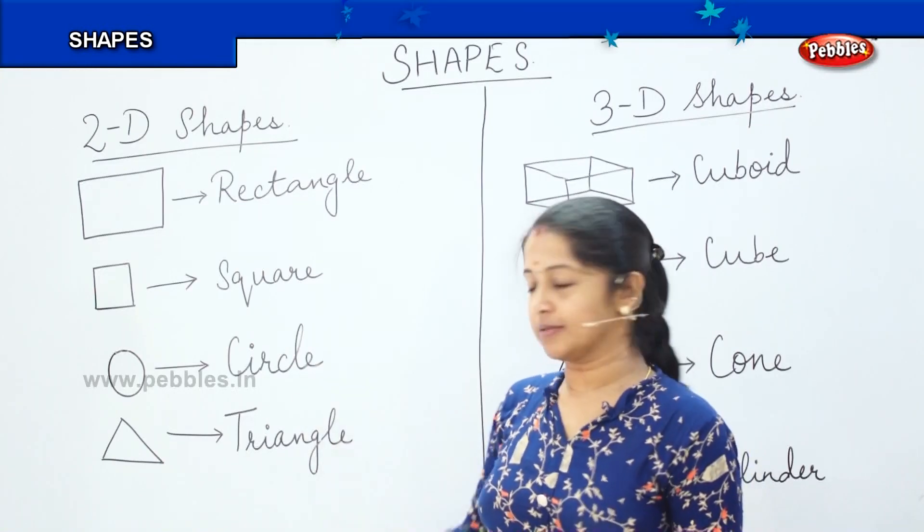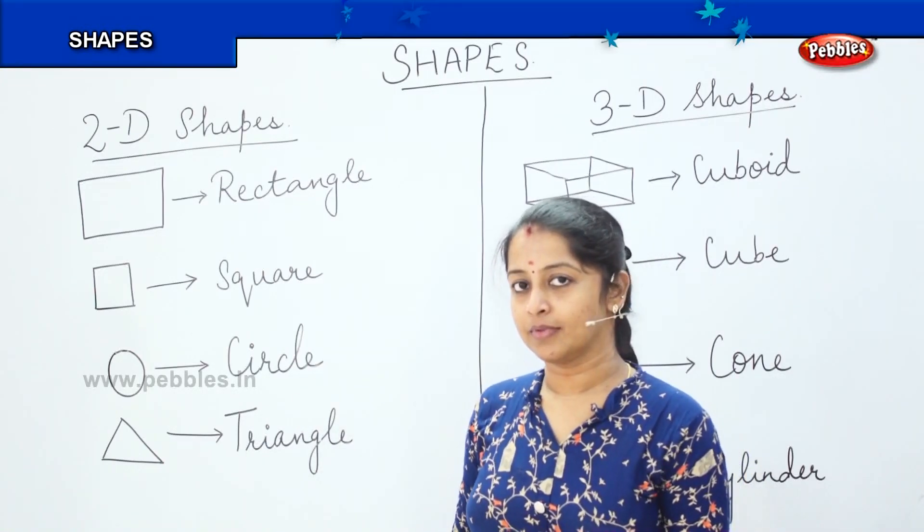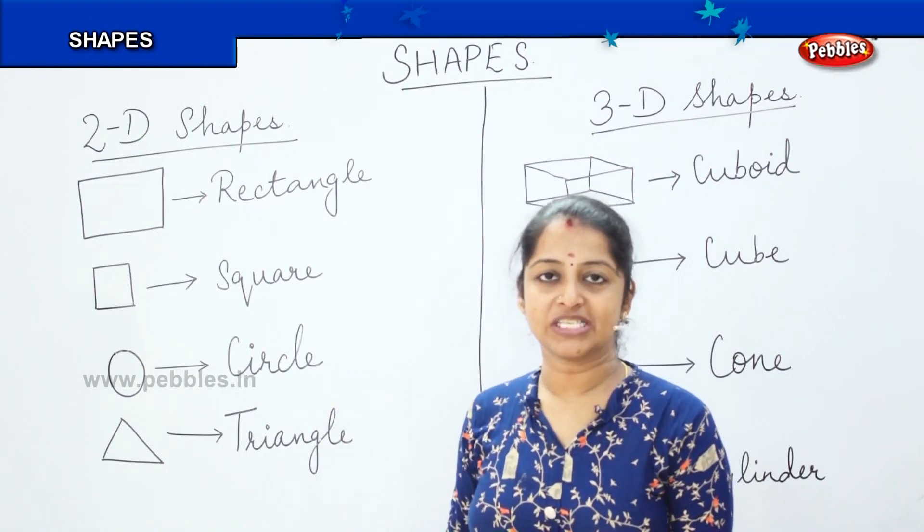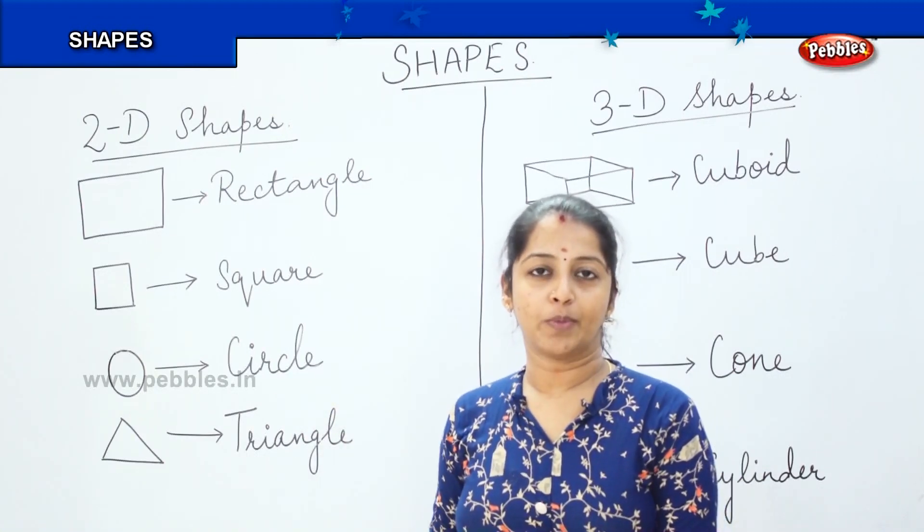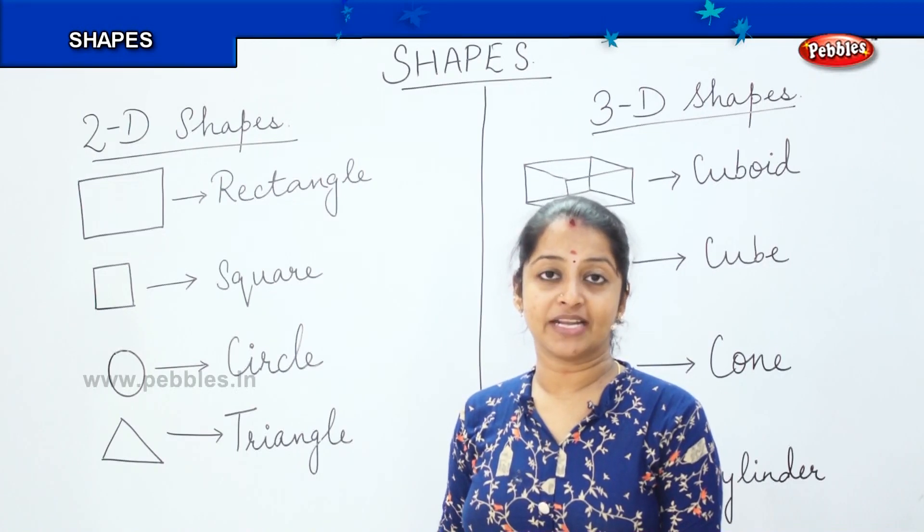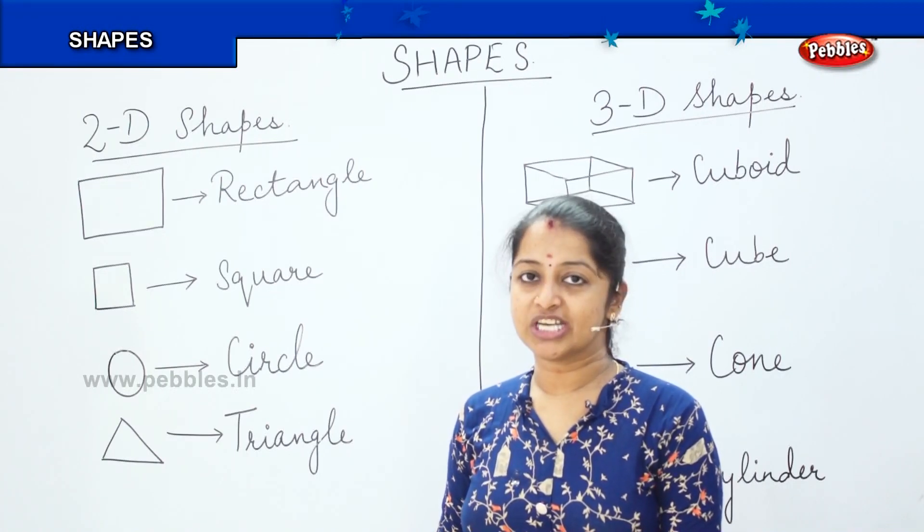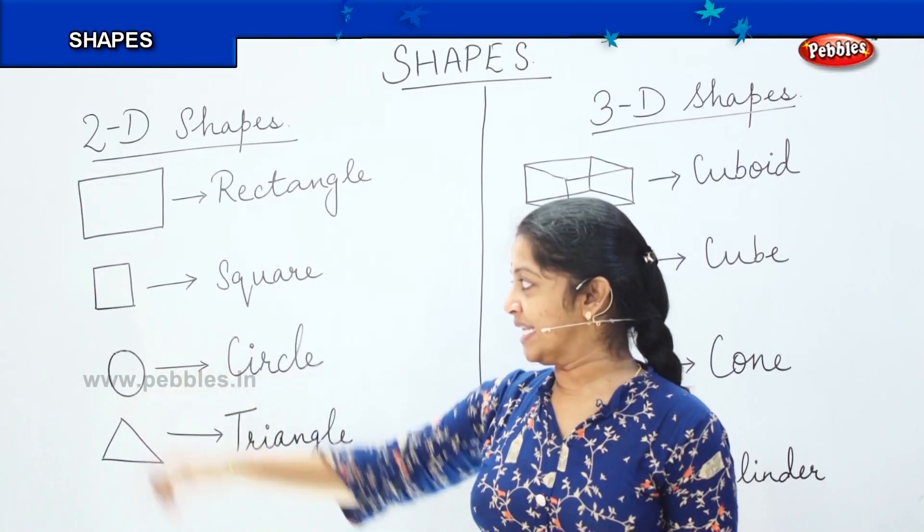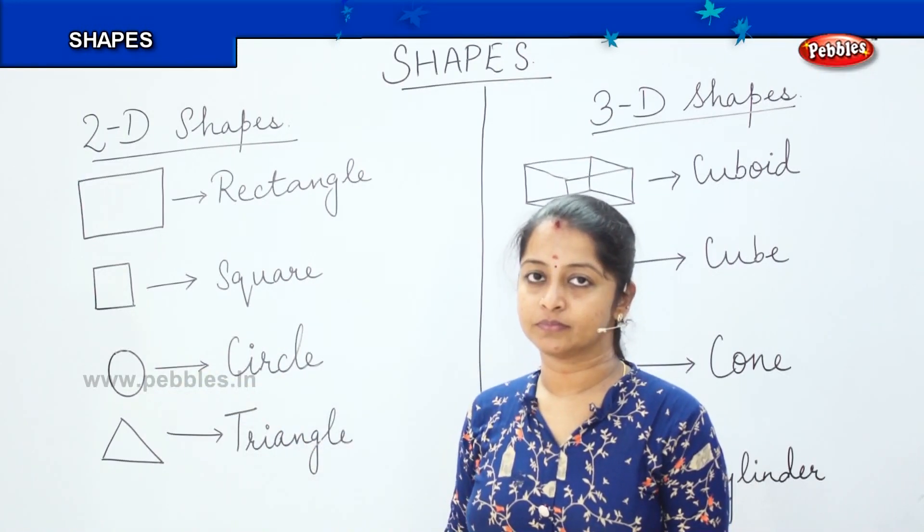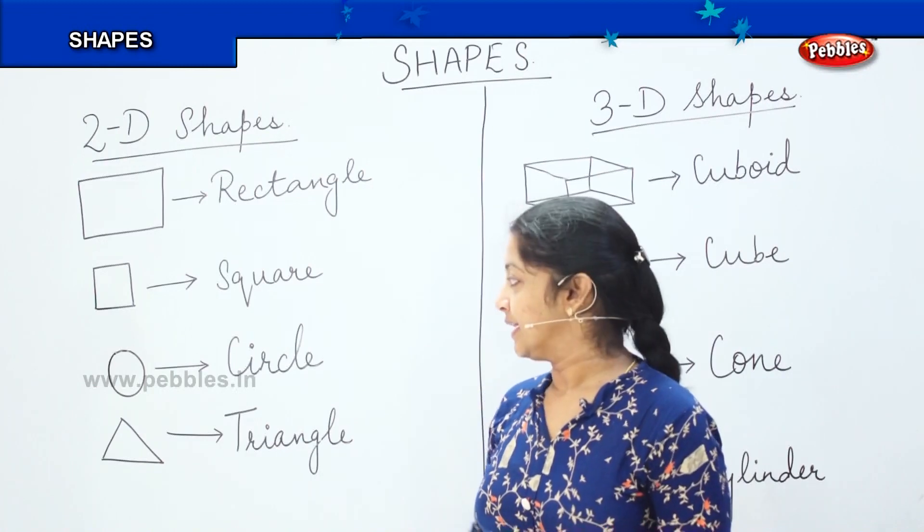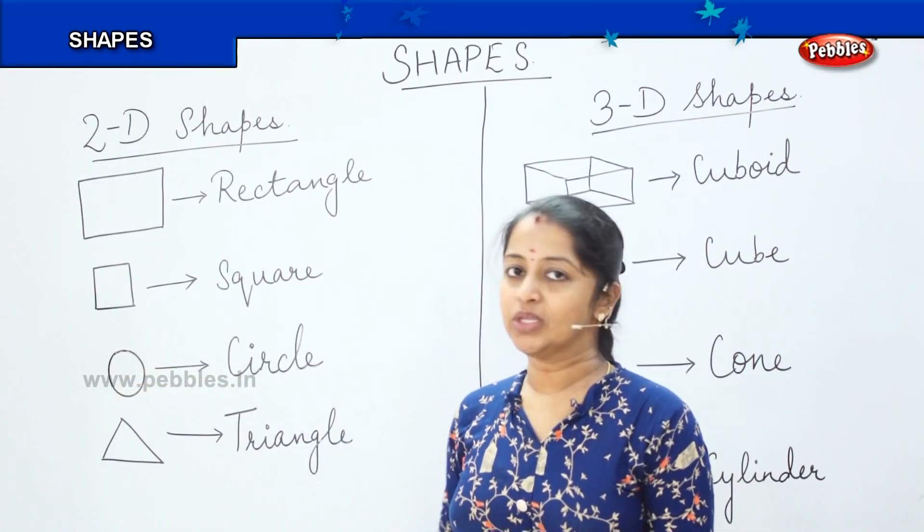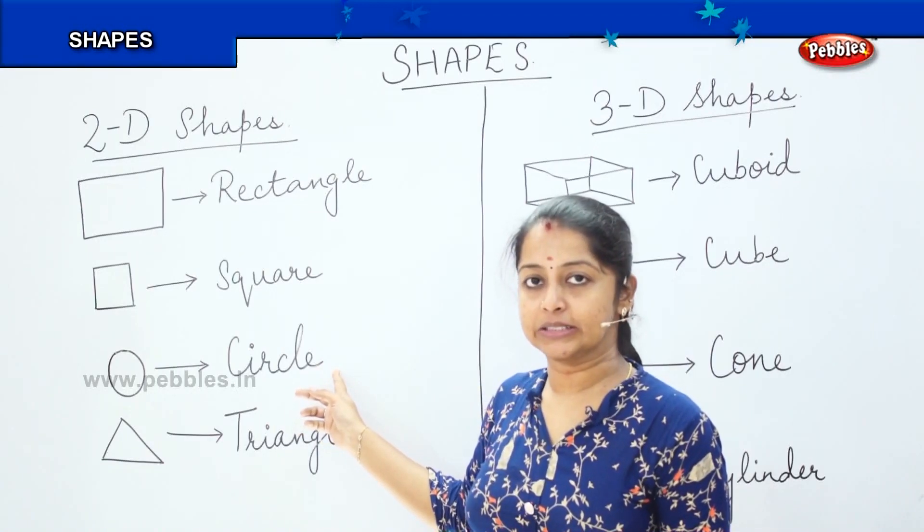What about this? Yes, this is a circle. Have you seen a coin? What is the shape of the coin? One rupee coin, two rupee coin. Now we have ten rupee coin as well. So what is the shape of the coin? It is a circle. Can you see any lines in the circle? Very good. There are no lines. It is just formed with a curved line. So there are no sides in a circle.